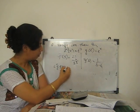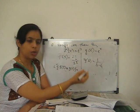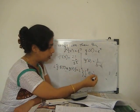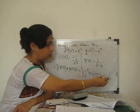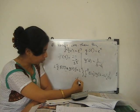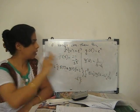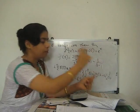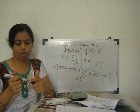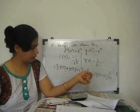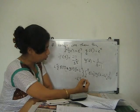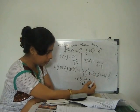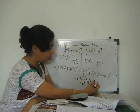Applying the convolution definition: L{f(t)*g(t)} = L{∫₀ᵗ f(u)·g(t−u) du}. Substituting f(u) = u² and g(t−u) = e^(t−u), we need to evaluate L{∫₀ᵗ u²·e^(t−u) du}. The required result should be 2/[s³(s−1)] to verify the convolution theorem.